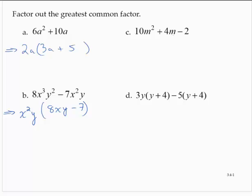10m squared plus 4m minus 2. 10, 4, and 2 share a factor of 2. Now, we cannot include any variable factors because not all of the terms include variable factors. So I can write this as 2 times 5m squared plus 2m minus 1.